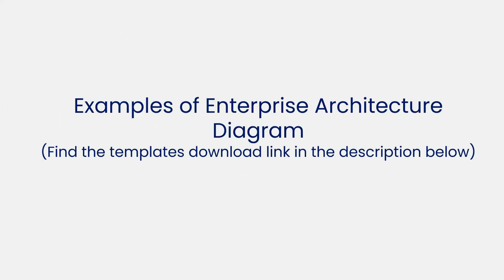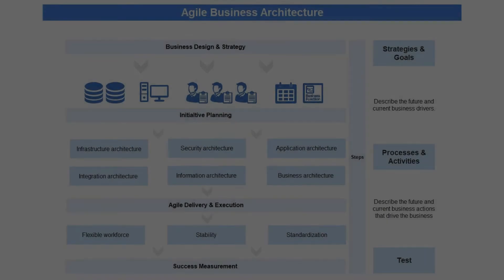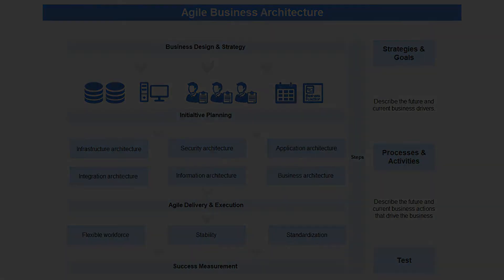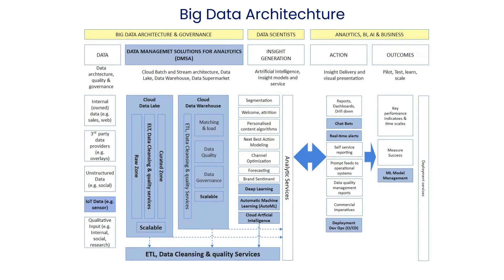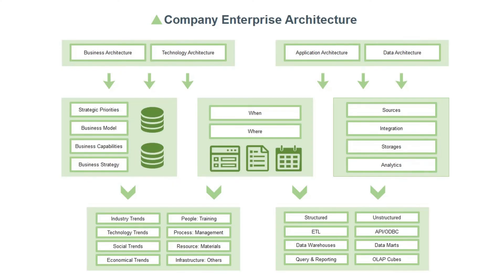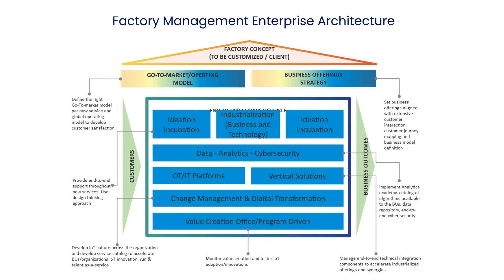Now let's see more examples of enterprise architecture diagrams. Here's an Agile business architecture. This is Big Data architecture. Company enterprise architecture. And Factory management enterprise architecture.